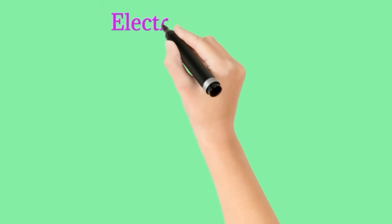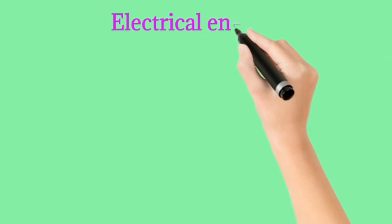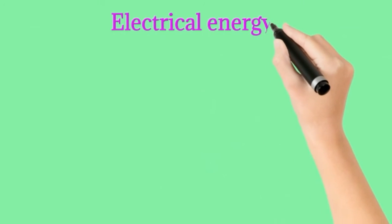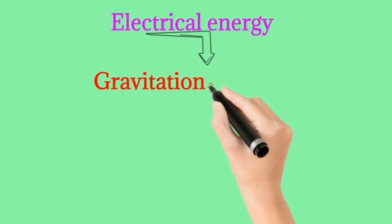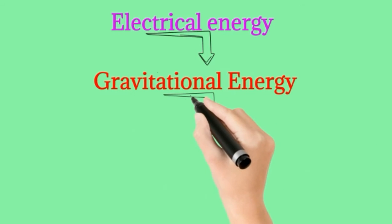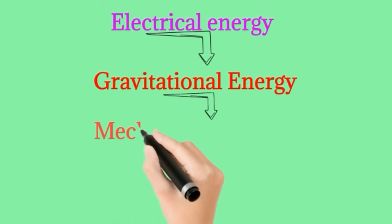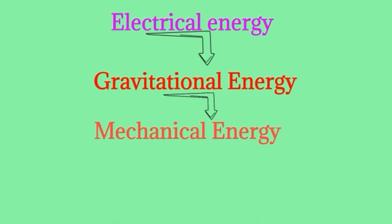Students, here I have drawn a flow sheet diagram showing the energy conversion in a roller coaster. The electrical energy is converted into gravitational energy, which is converted into mechanical energy, which is then converted into mechanical energy plus heat energy.